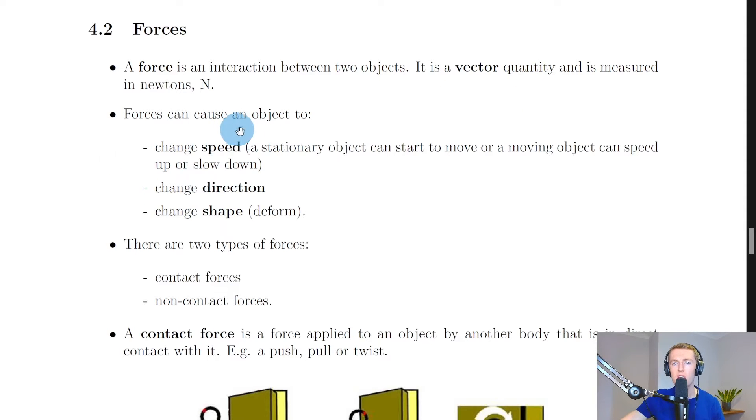Remember a vector quantity is one that has both the magnitude and the direction. Forces can cause an object to change speed, change direction, and change shape. A stationary object can start to move or a moving object can speed up or slow down if a force is applied to it.